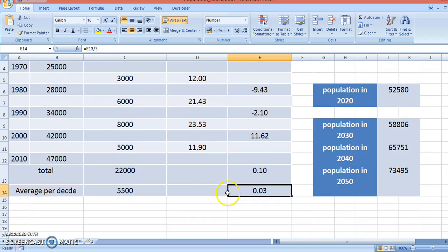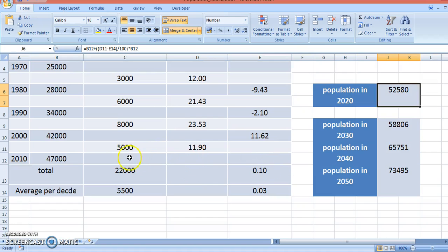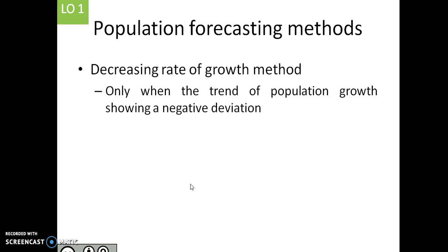Now what is the calculation? We take the base value plus the incremental increase or decrease in population times the base population. We get this value. We cannot do continuously for 4 decades, we do 1 by 1. 2020, then based on 2020 data we can calculate 2030, 2040, and then 2050. This is the decreasing rate of growth method.